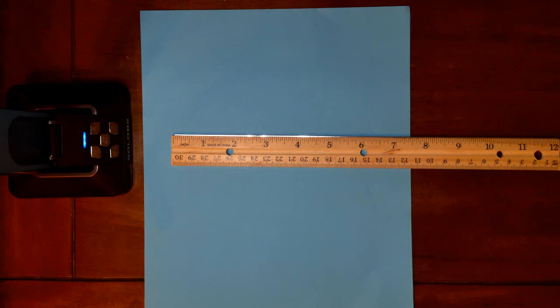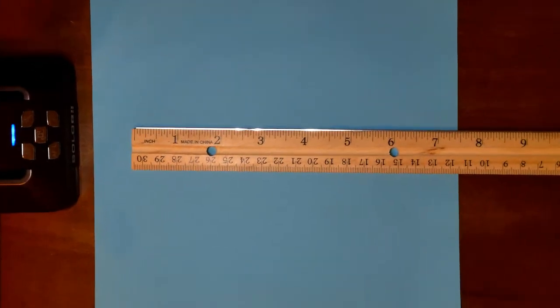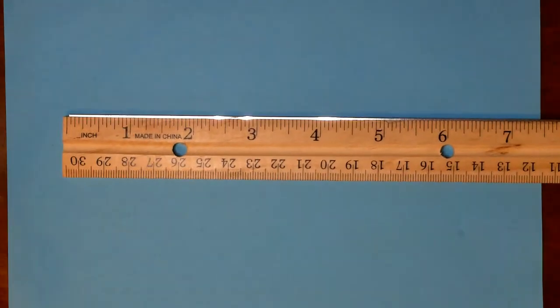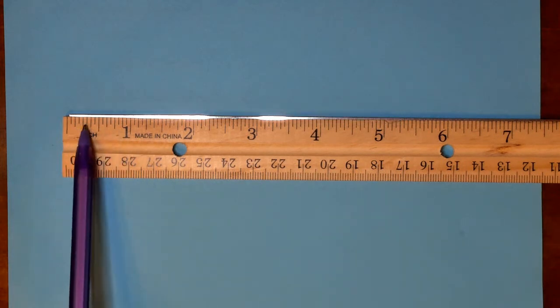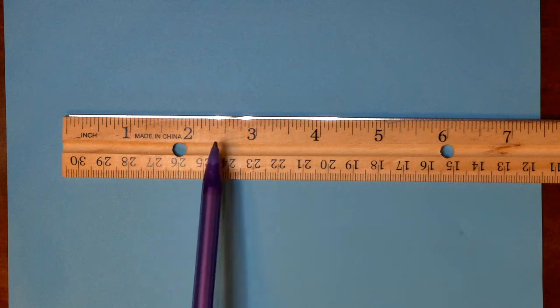So, this is Chapter 11, Customary Measurement, and before we start, let's take a really good look at a ruler. You can see that on this side, we have customary measurement, inches.